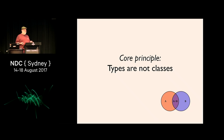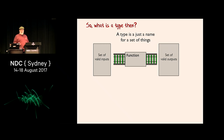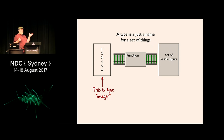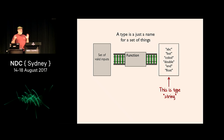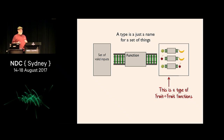Types are not classes - we're talking about statically typed functional programming like F# and Haskell. A type is just the name for a set of things that can be used as inputs or outputs. All possible integers is the type Integer. All possible strings is the type String. There's no behavior - they're not objects, it's literally just data. You can have more complex types: a set of people is type Person, a set of fruits is type Fruit. And a set of functions from fruit to fruit is also a type. That's all a type is.